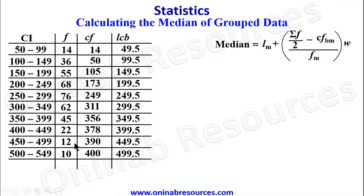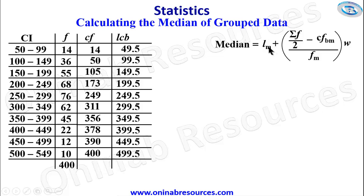The sum of frequencies is confirmed to be 400. To find Lm, we must identify the median class. We divide the total population 400 by 2 to get 200, then look at the cumulative frequency to find where 200 falls. The cumulative frequency of 249 is the first value that exceeds 200, so that is where the median class lies.